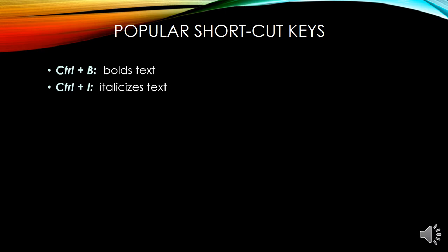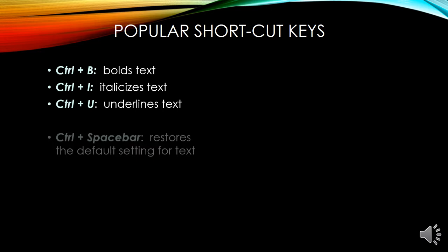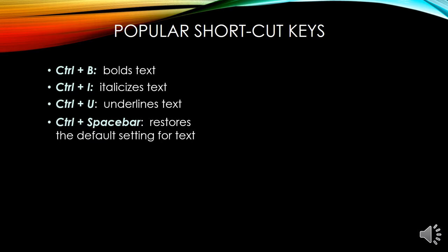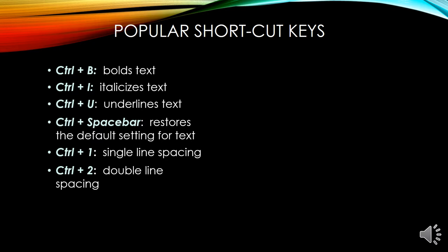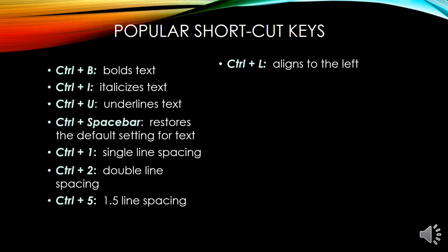Ctrl plus B bolds text. Ctrl plus I italicizes text. Ctrl plus U underlines. Ctrl plus Spacebar restores the text to its default setting. Ctrl plus 1 turns a document into single space. Ctrl plus 2 adds double line spacing. Ctrl plus 5 gives you 1.5 line spacing. Ctrl plus L aligns the paragraph on the left side.